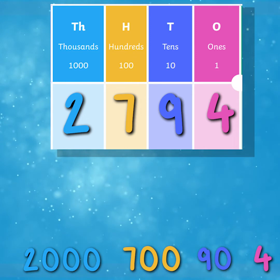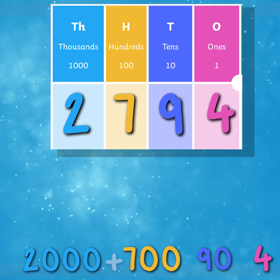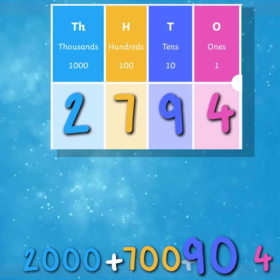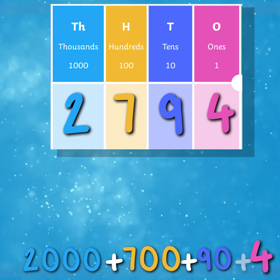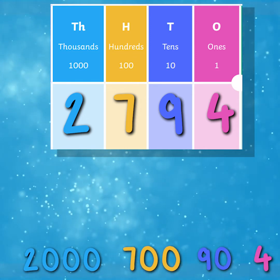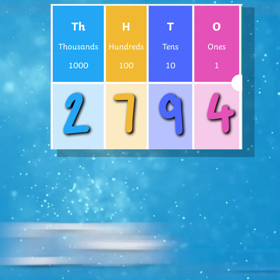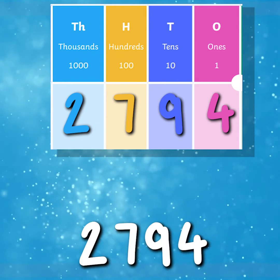This means that two thousand, add seven hundred, add ninety, add four is two thousand seven hundred and ninety-four. Now that we have worked out the value of the digits on the place value chart, let's try and do it the other way around.